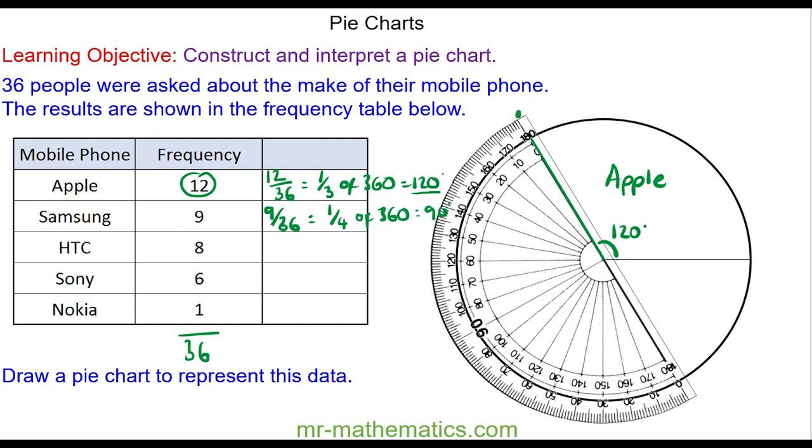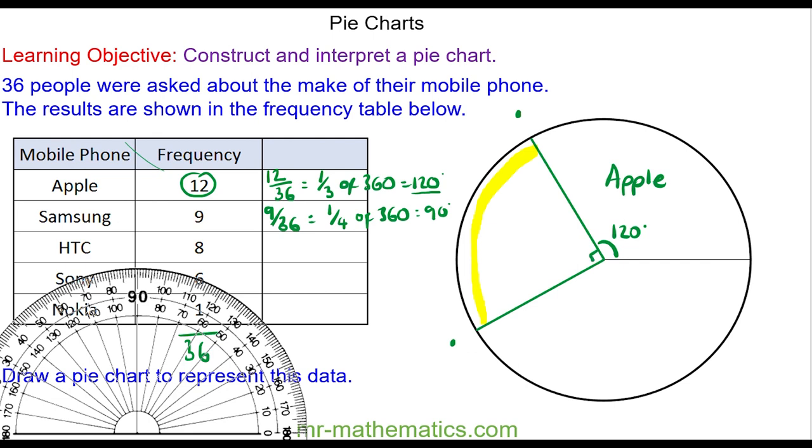We rotate our protractor so zero is on the new radius, and we mark an angle that is 90 degrees. And again, we draw a line from the center of the circle to the point at 90 degrees. So we can label it as a perpendicular angle, and we need to include a title, which is Samsung.